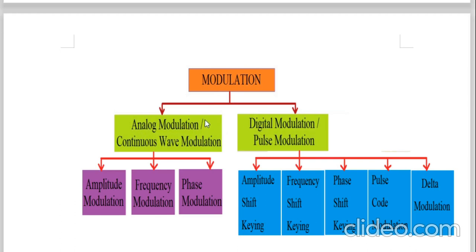Analog modulation is also called continuous wave modulation. An analog signal is a continuously varying signal with respect to time — just as the example of a sine wave I told you. This green wave shown here goes in positive half cycle and negative half cycle — it is an analog signal. The definition of analog signal: a signal which is continuously varying with respect to time.